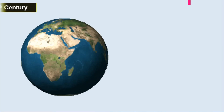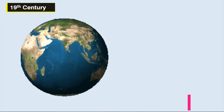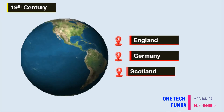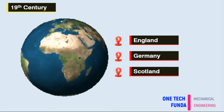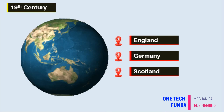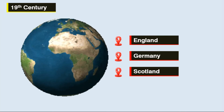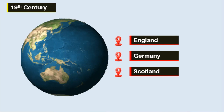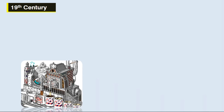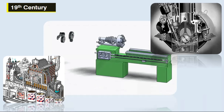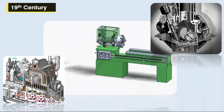During the early 19th century Industrial Revolution, machine tools were developed in England, Germany, and Scotland. This allowed mechanical engineering to develop as a separate field within engineering. They brought with them manufacturing machines and the engines to power them.